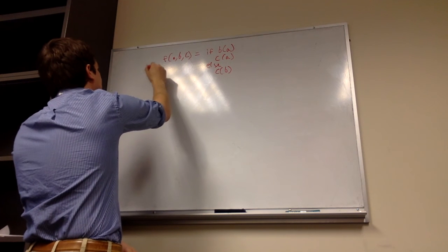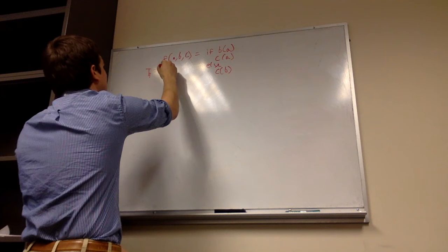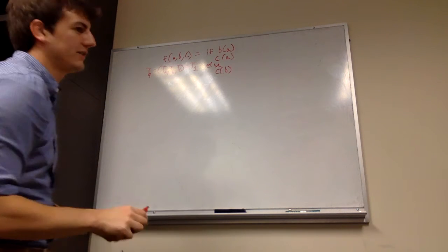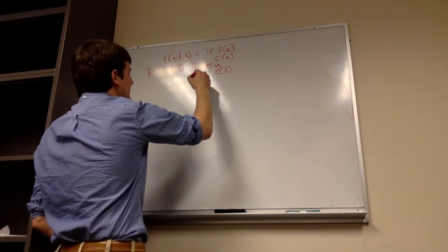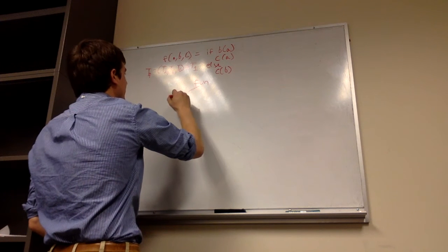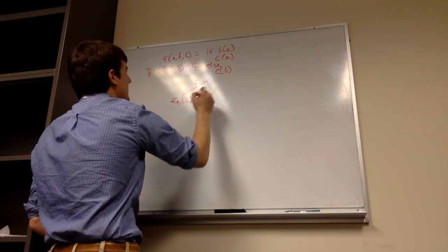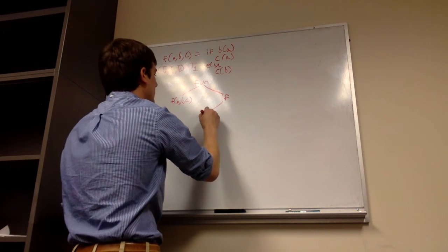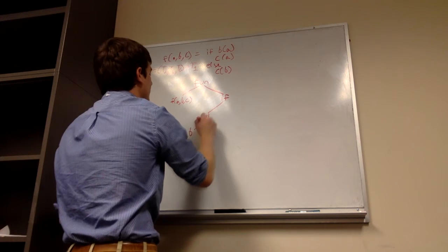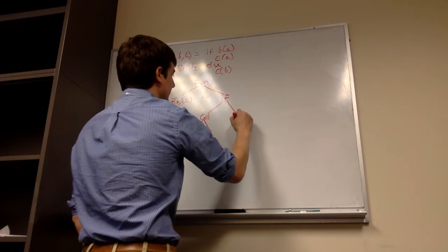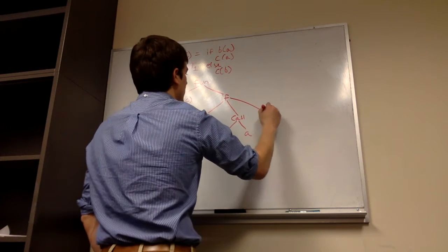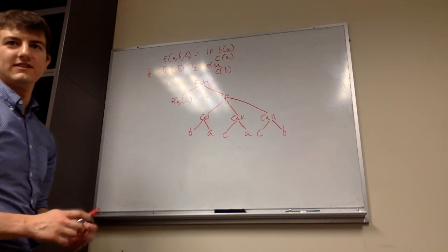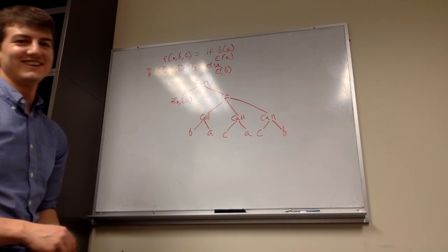The question asks us for the type of f. We know the type of f is a function that takes in a type of a, a type of b, a type of c, and returns some type t1 — we don't know what it is. If we draw our abstract syntax tree, here we have a function definition with parameters a, b, c, and it has an if statement. The if condition is a call where b is on the left and a is on the right. If this succeeds, we have a call where c is on the left and a is on the right, and in the else branch, we have a call where c is on the left and b is on the right.